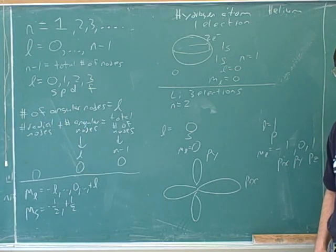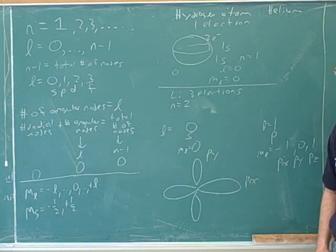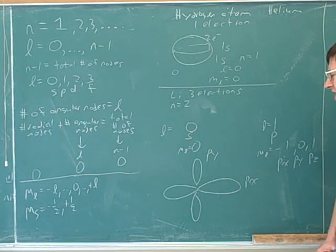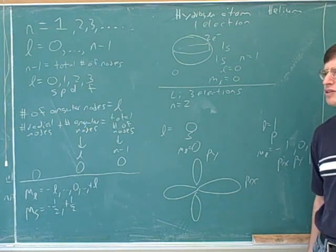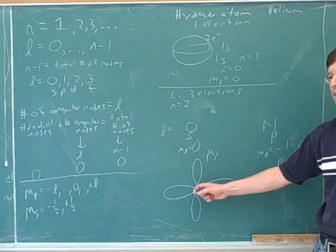And those are the three different places that you can put the electrons. So the book only usually draws one of the three at a time. They don't usually superimpose the image. Depends on the picture. There's actually some pictures in the book where they draw all three. Usually they draw a separate picture for each one.